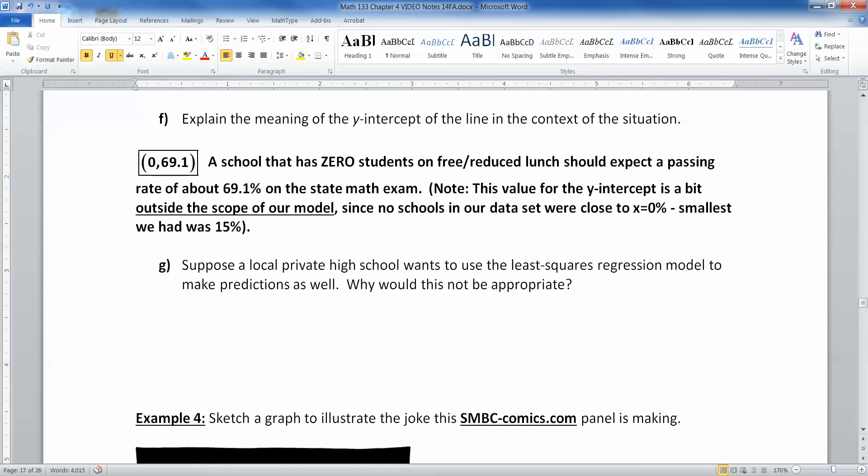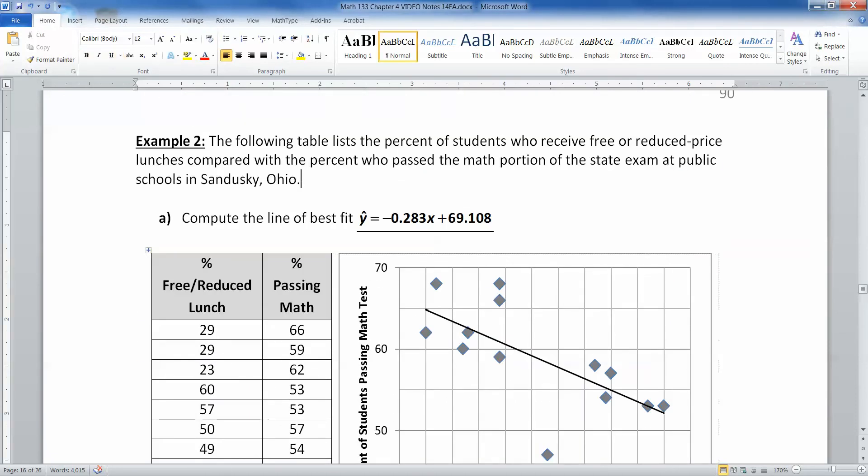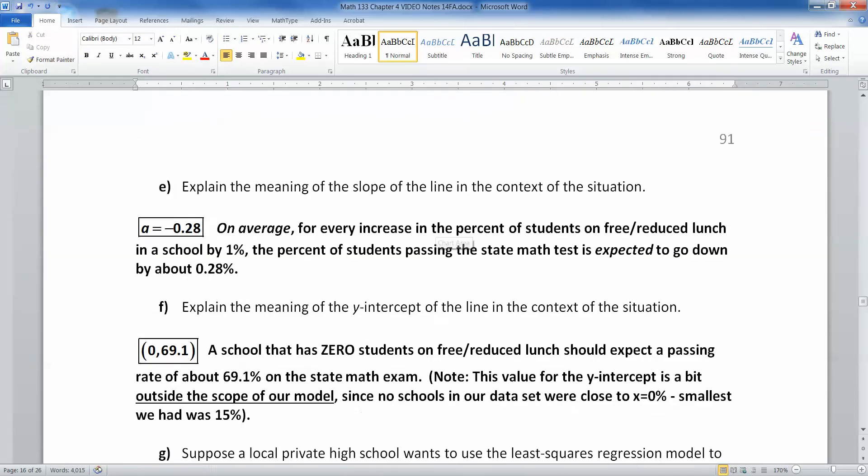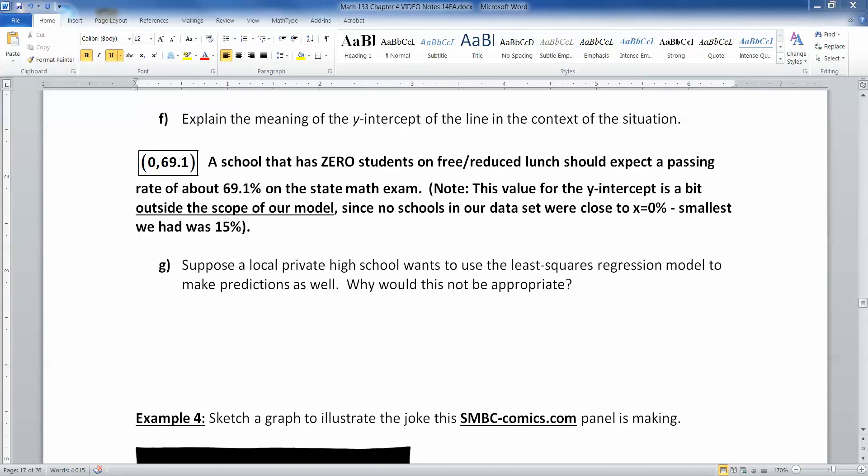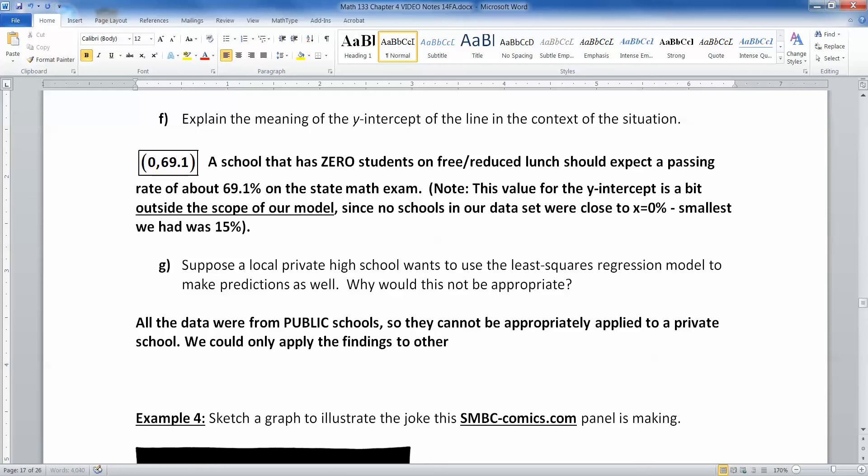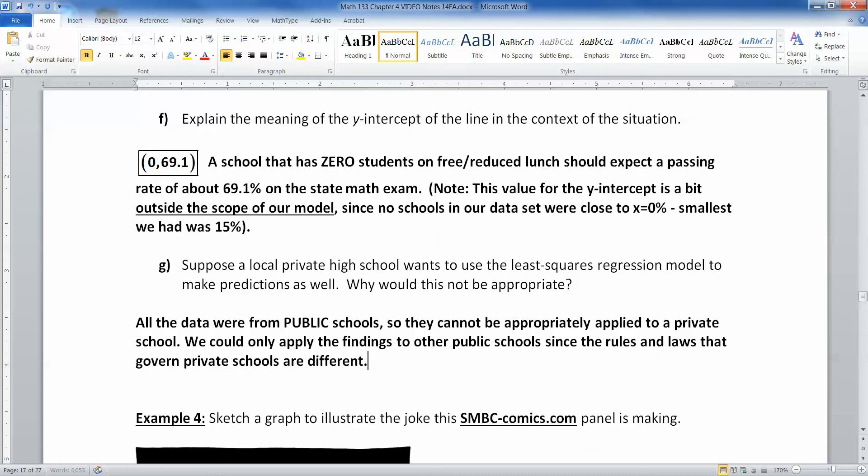Next, the local private high school wants to use this least squares regression model to make predictions. Why would that be inappropriate? Well, if you look back at the data set, this was only public schools. So it's not appropriate to use it for private schools because private schools have different rules and everything else that governs them. So all of the data sets were public. So therefore it should not be used to apply to private schools. We could only apply the findings to similar, to other public schools. Since the rules and laws that govern private schools are different.